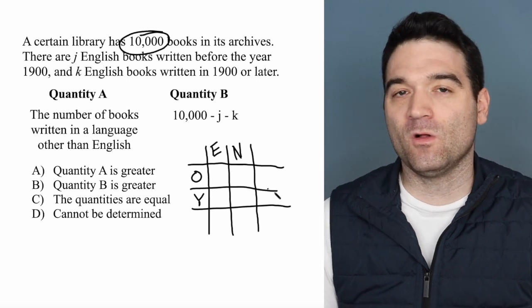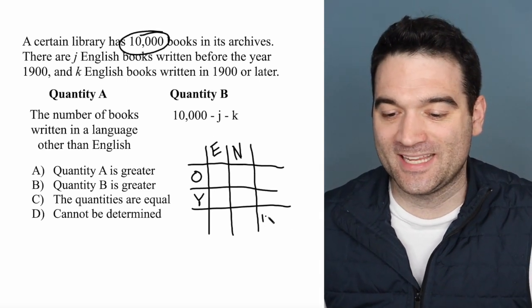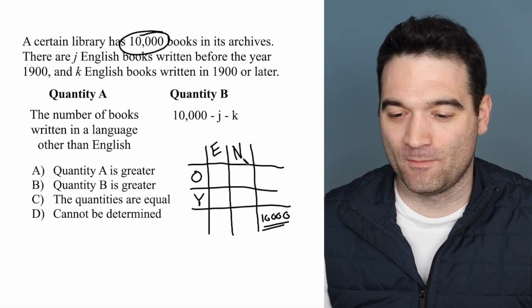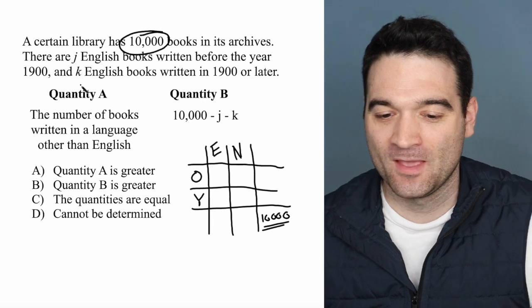But what needs to be true is that all of these books have to add up to the number 10,000, right? So 10,000 is the number that we have to hit when we add all of the cells together.